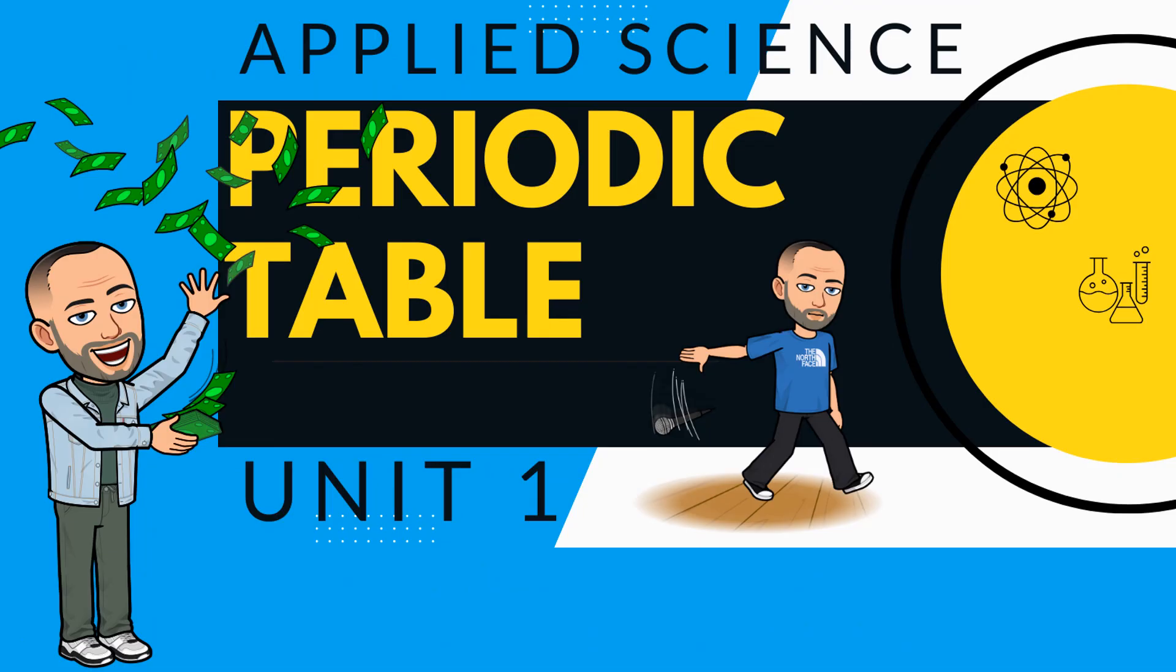That does end learning aim A1. So the next set of videos is going to start looking at learning aim A2, and we will start with the periodic table. Look out for that video. Thanks for watching.